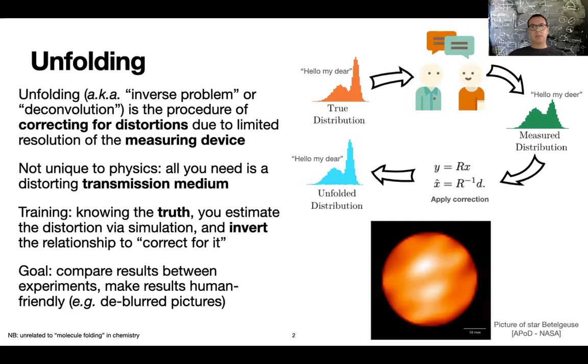So specifically in our case, the goal is to compare results between experiments and make the results more human friendly. For example, if you want to present the picture of a distant star, you may want to apply some de-blurring, following substantially a deblurring or denoising algorithm.